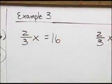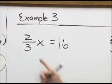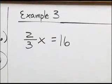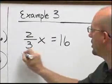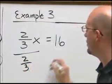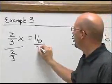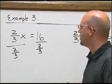Using our rule, undoing what has been done, we would say we're multiplying x by two-thirds. So to undo multiplication, we would do division. And we would divide this side by two-thirds. Must do the same thing to both sides. We would divide this side also by two-thirds.